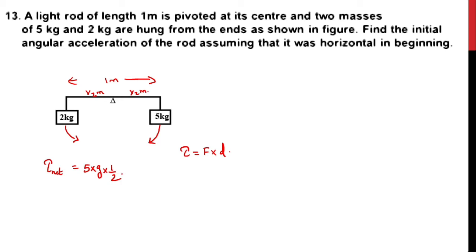So mg times 1/2 minus the anti-clockwise moment, which is 2 times g times 1/2. What is the final answer for net torque? τ_net equals, if we take g equals 10 m/s², we can write 25 minus 10, which equals 15 newton meters as the net torque acting.